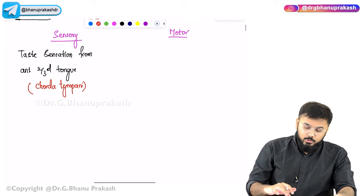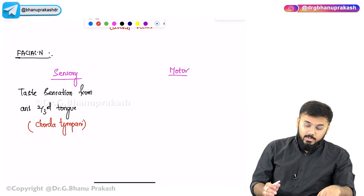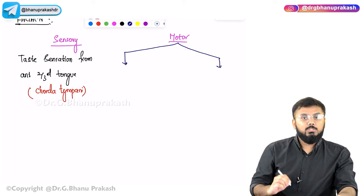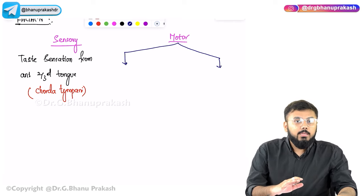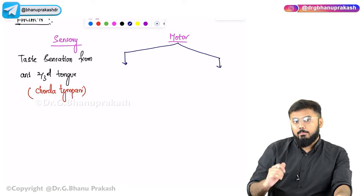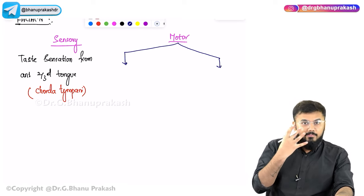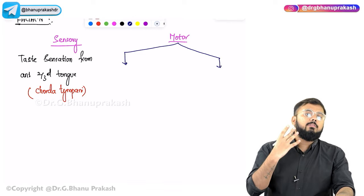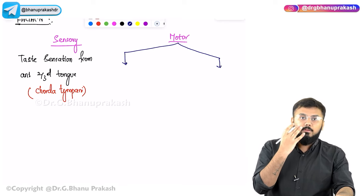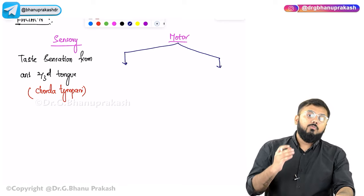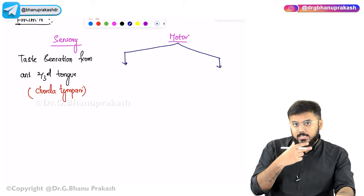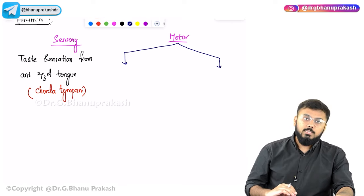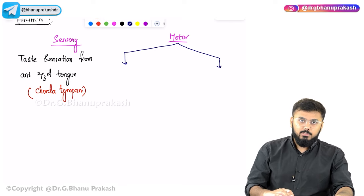For motor functions of CN VII, there are two types: somatic and parasympathetic. Somatic functions include innervating the muscles of facial expression (eyelid closing via orbicularis oculi), jaw opening, and hyoid elevation.